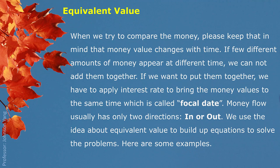If a few different amounts of money appear at different times, we cannot simply add them together. We have to change the value to the same time. If we want to put them together, we have to apply an interest rate to bring the money value to the equivalent value at the same time, which is called the focal date.